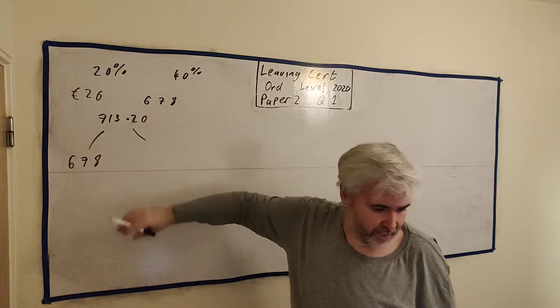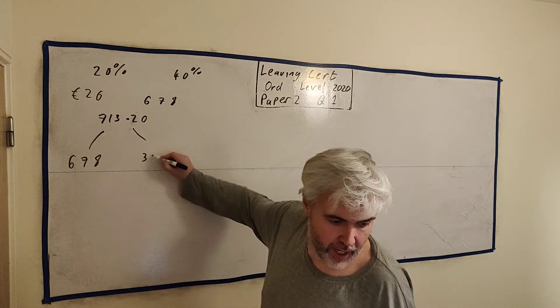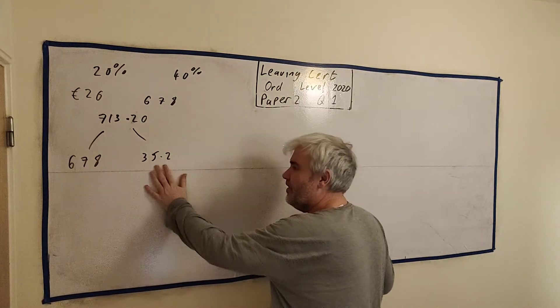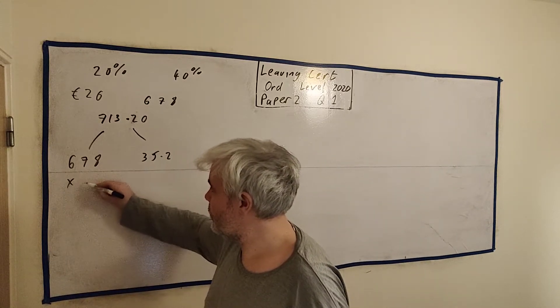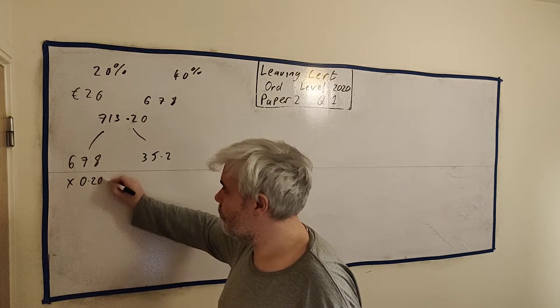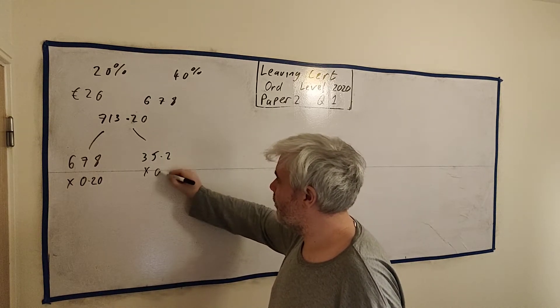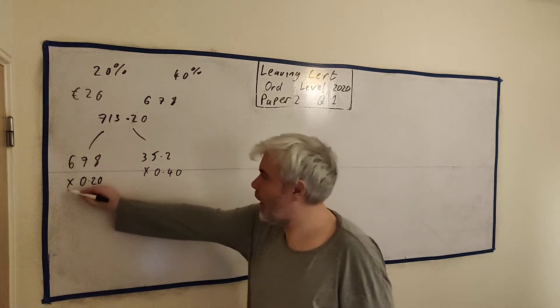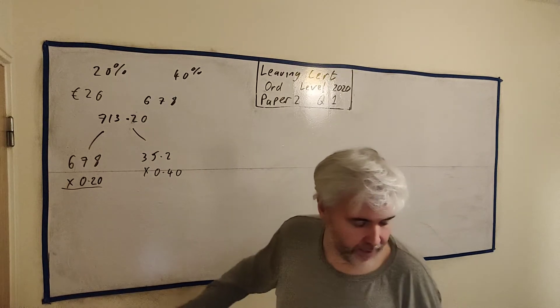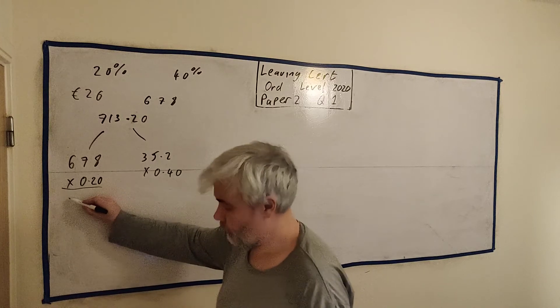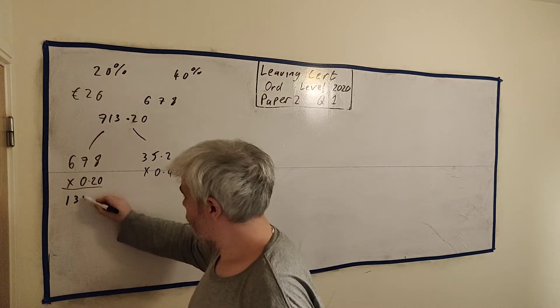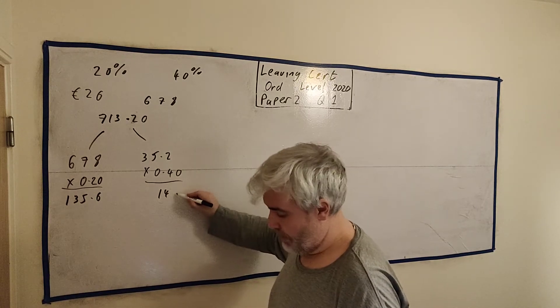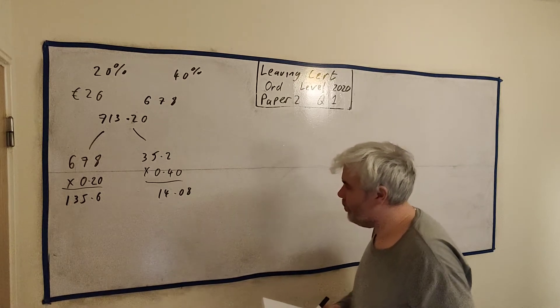So what is the rest? That is €35.20. So he has to pay tax at the normal rate here and at the higher rate here. So let's do that. Let's multiply this one by 20%, that's 0.20. Multiply this one by 40%, 0.4 or 0.40 if you'd rather. And then on this amount, the tax he's going to pay is €135.60, and this is €14.08 - 14 euro and 8 cent.